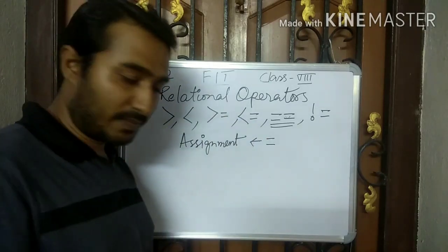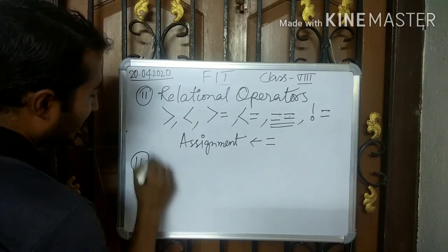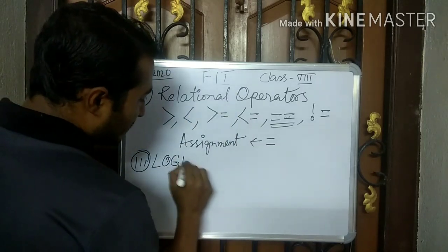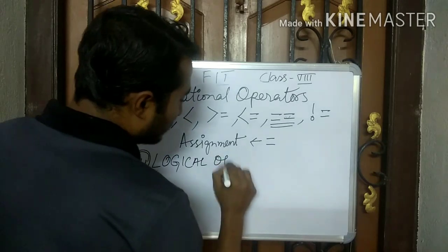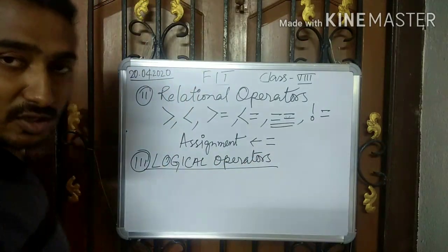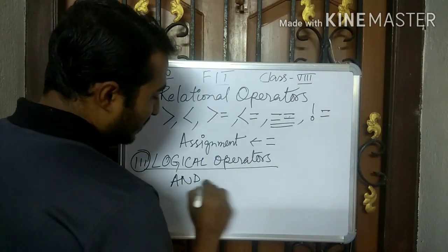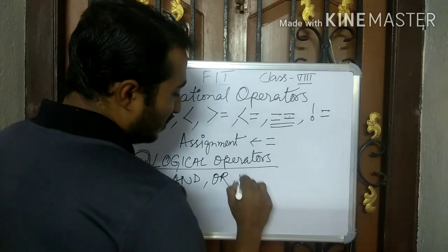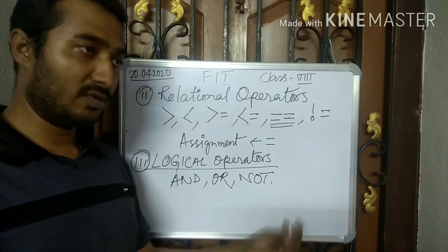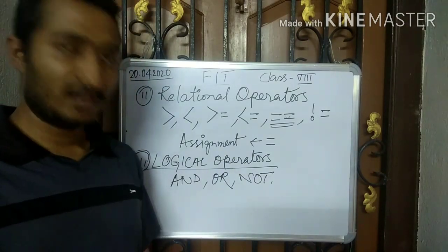The third type under binary operators is logical operators. How many logical operators are there? There are three logical operators: AND, OR, and NOT. You have already used these in class 7 and will use them again in class 8.